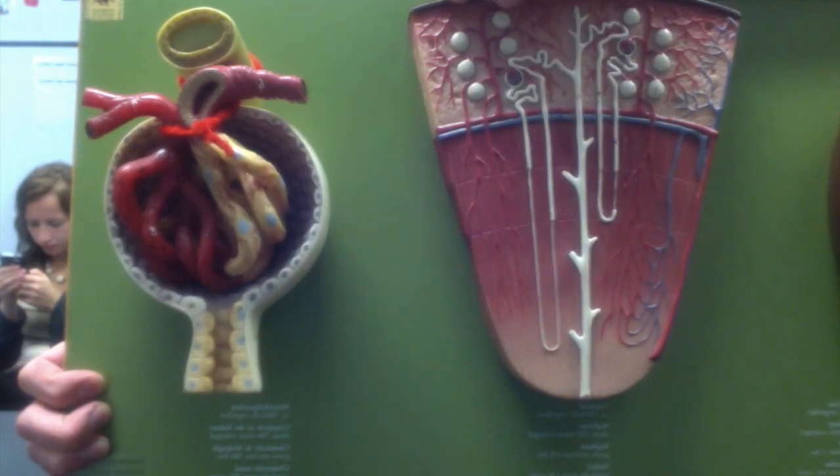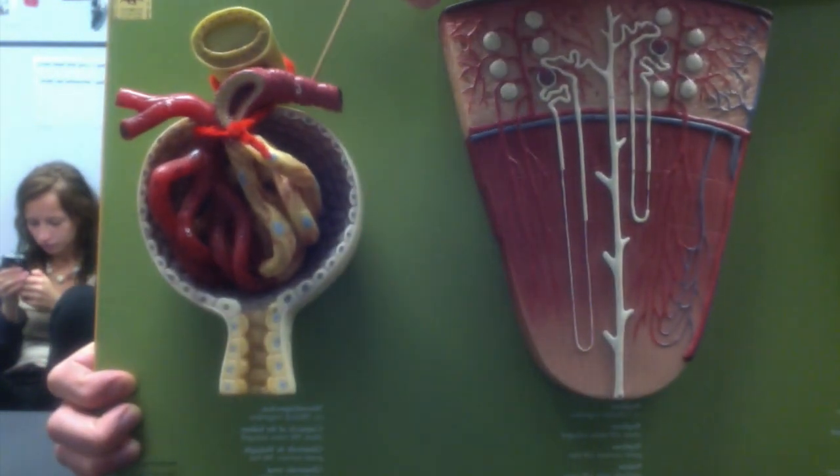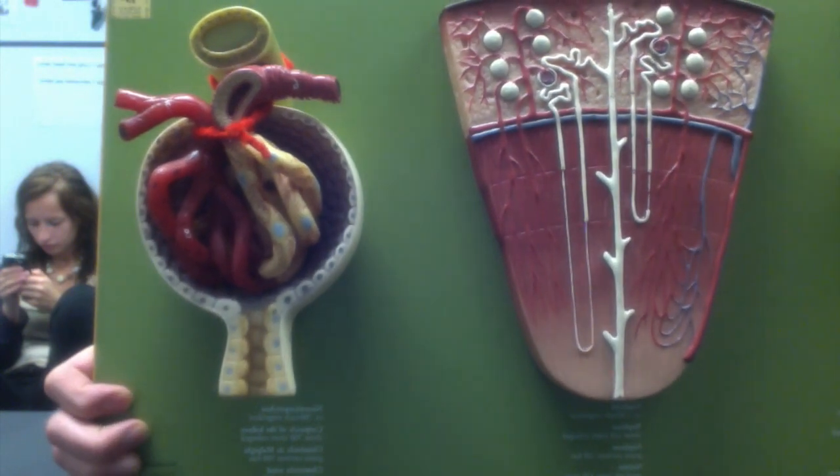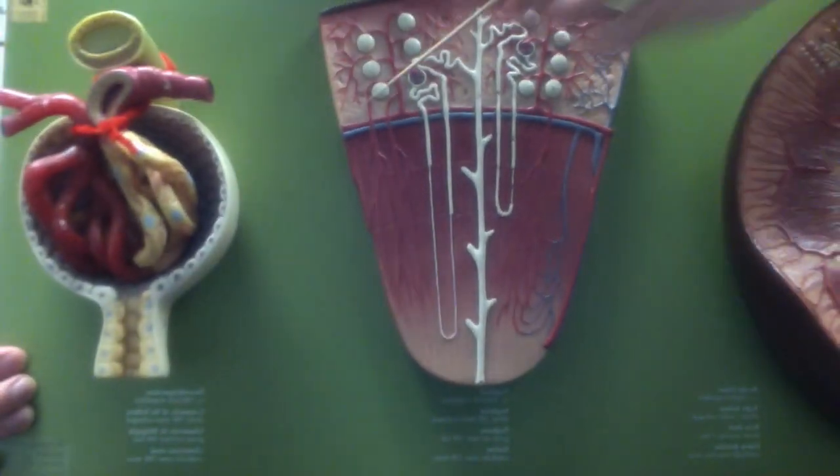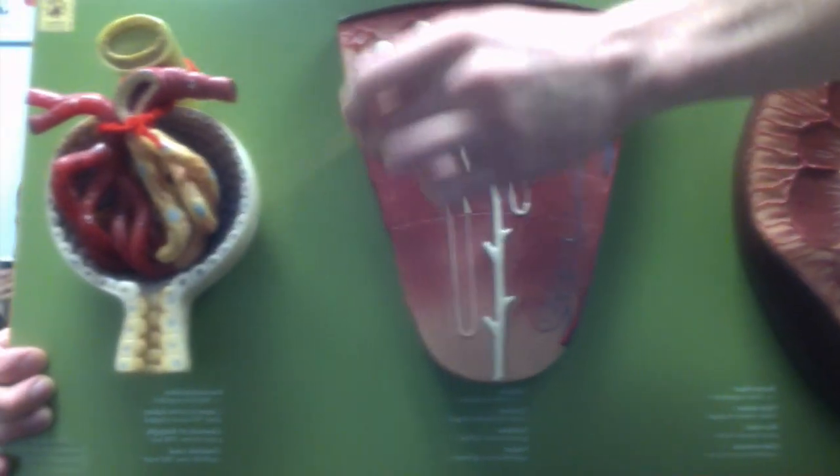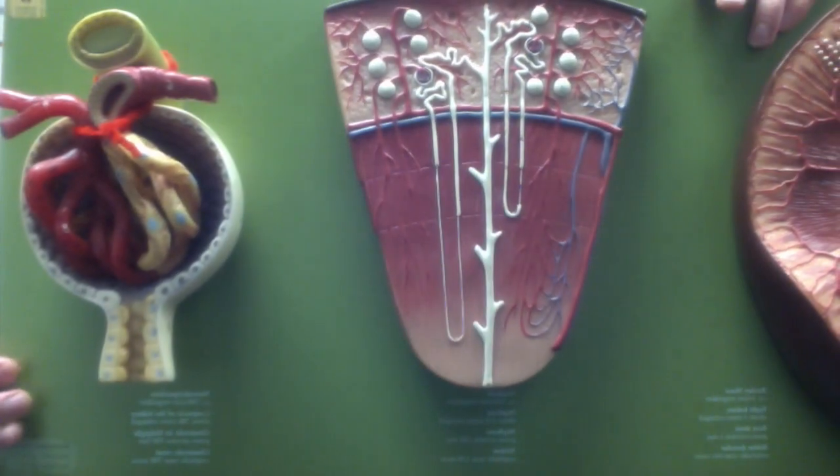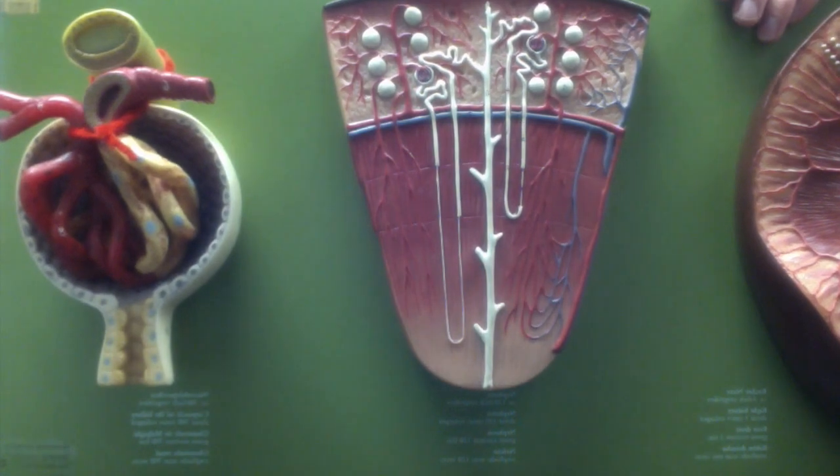The efferent arteriole comes out of the renal corpuscle. Inside the renal corpuscles you have the glomerulus, which is a capillary bed that filters the plasma out of the blood and leaves the red blood cells within the vessels.